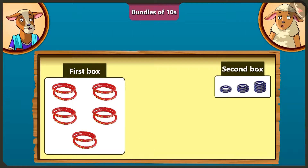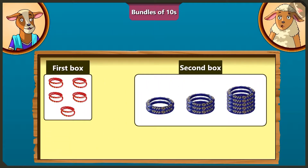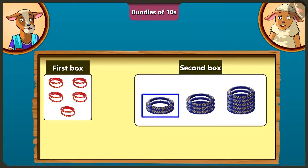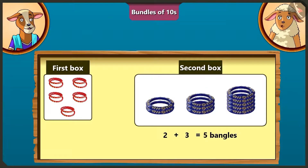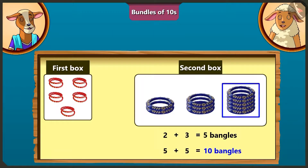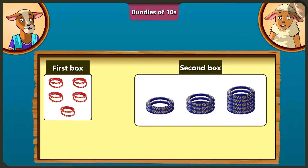Now I will count the second box the same way. You count. There will be 5 bangles if we add 2 bangles of the first row and 3 bangles of the second row, and if we add 5 bangles of the third row to these 5 bangles, then there will be total 10 bangles in the second box. So there are 10 bangles in total.